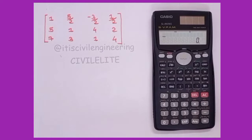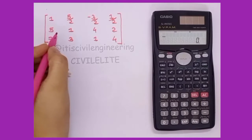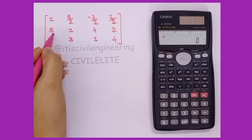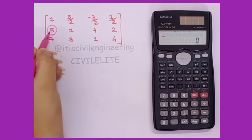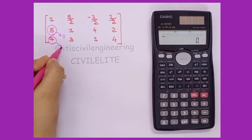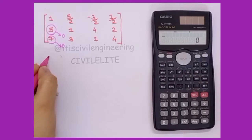Suppose we are having this matrix. Here in the second row, the first element is 5, and in the third row, the first element is 7. Now we want to make this 5 and 7 as 0.